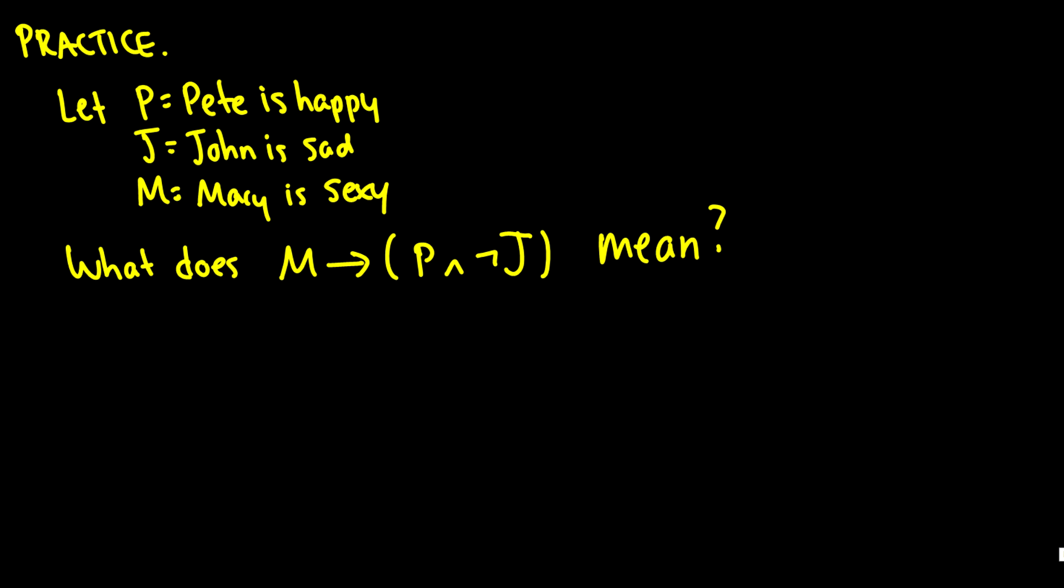So let's do some practice here. We're going to let P be Pete is happy. We're going to let J be John is sad. And we're going to let M be Mary is sexy. Now what does M arrow P and not J mean? So take a second, see if you can figure it out. Hopefully, you are able to see a few things here. One, we have brackets. We bracket things to make sure that things are paired properly with each other. We also have something called scope, which I might talk about a little bit later. But essentially, when we have an and between two things, it binds it more powerfully than an arrow.